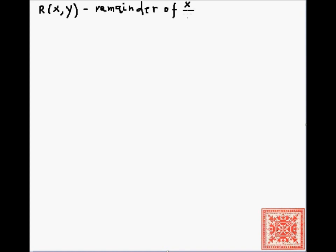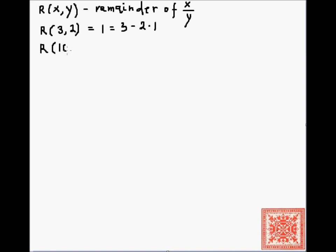That function is the remainder of x over y — the remainder of the division of x over y — and we will show that this function is also primitive recursive, enlarging our repertoire of primitive recursive functions. As an example, the remainder of 3 and 2 is equal to 1, and the remainder of 10 and 3 is equal to 1.